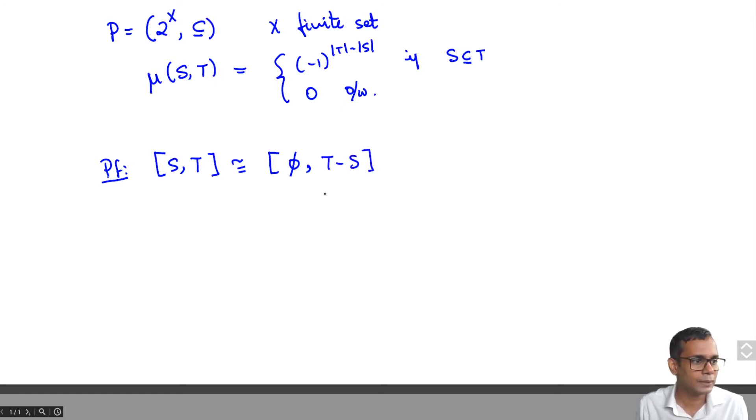And so it suffices to show, if we call this X now, then it suffices to show that mu(phi, X) equals (-1)^|X|. And we will do this using the recursive equation that we had for the Mobius function.